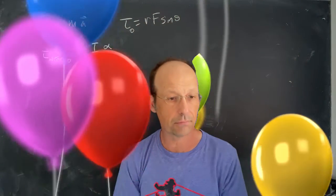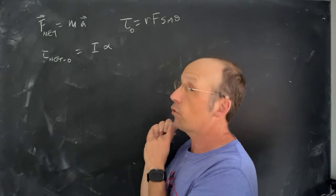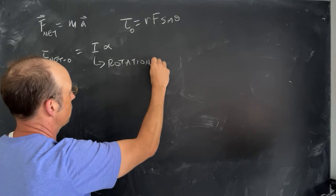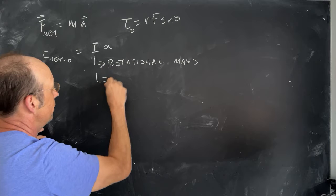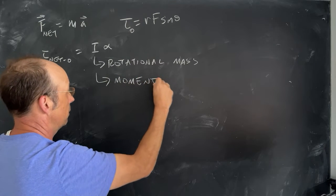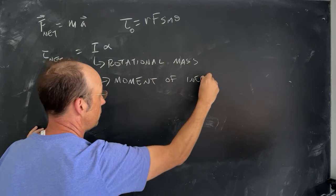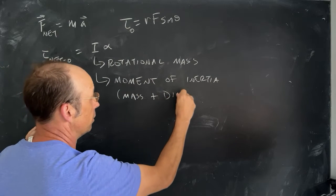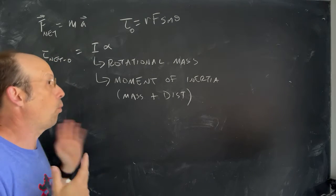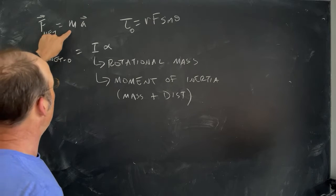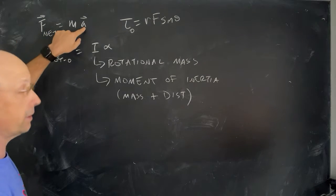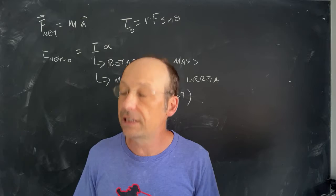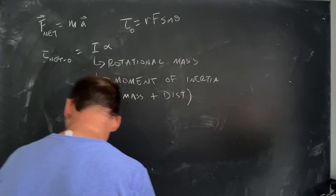I is the rotational mass, but it's technically called the moment of inertia. It depends on the mass of the object and the distribution of the mass. So it doesn't just depend on the mass. It depends on where that mass is. So let me give you an example. Remember, if I have a large mass with a certain force, I have a low acceleration. So mass tells me the resistance to changes in speed. Moment of inertia does the same thing. It tells me the resistance to change in angular motion.